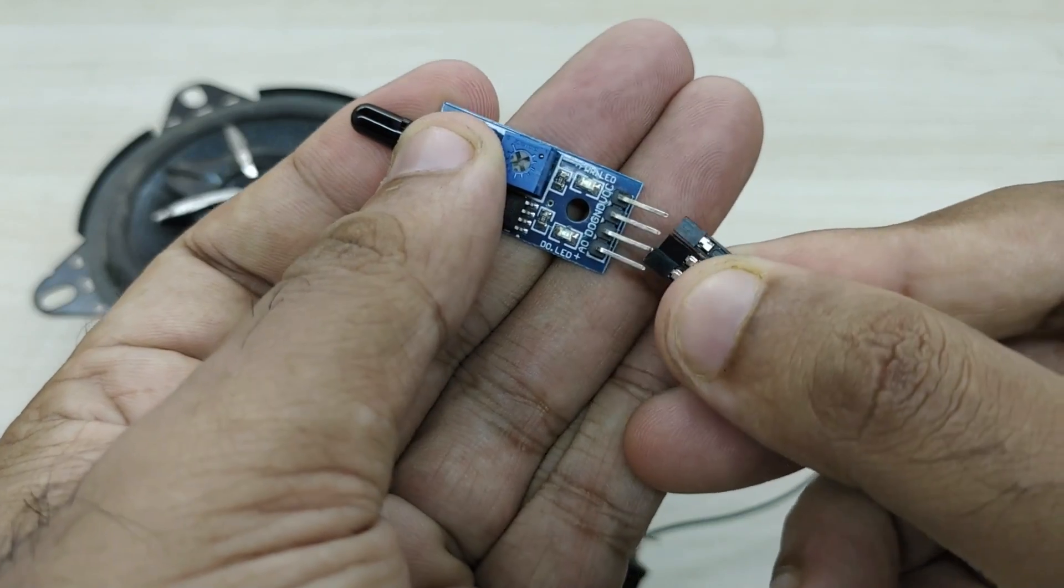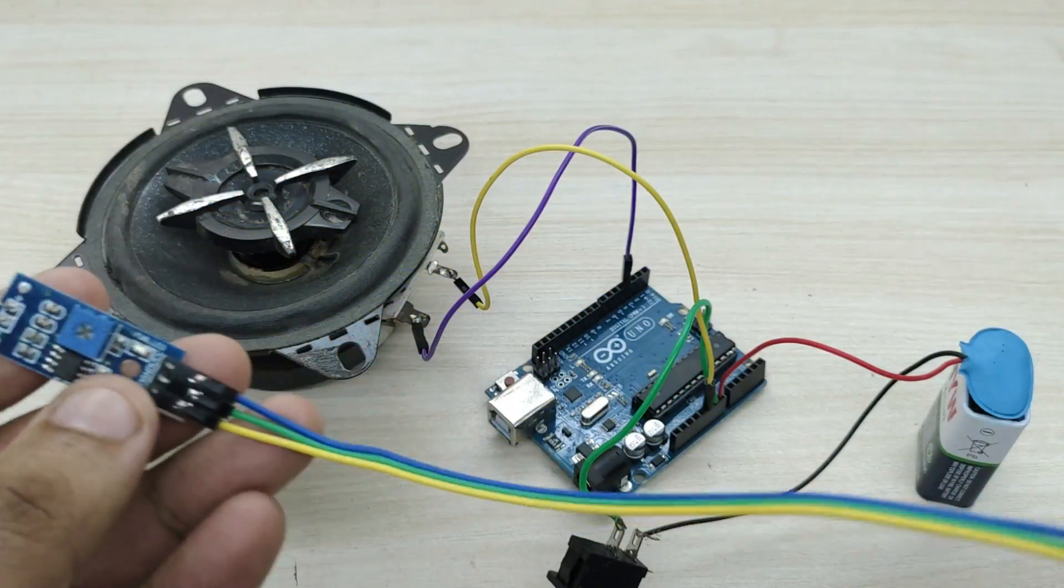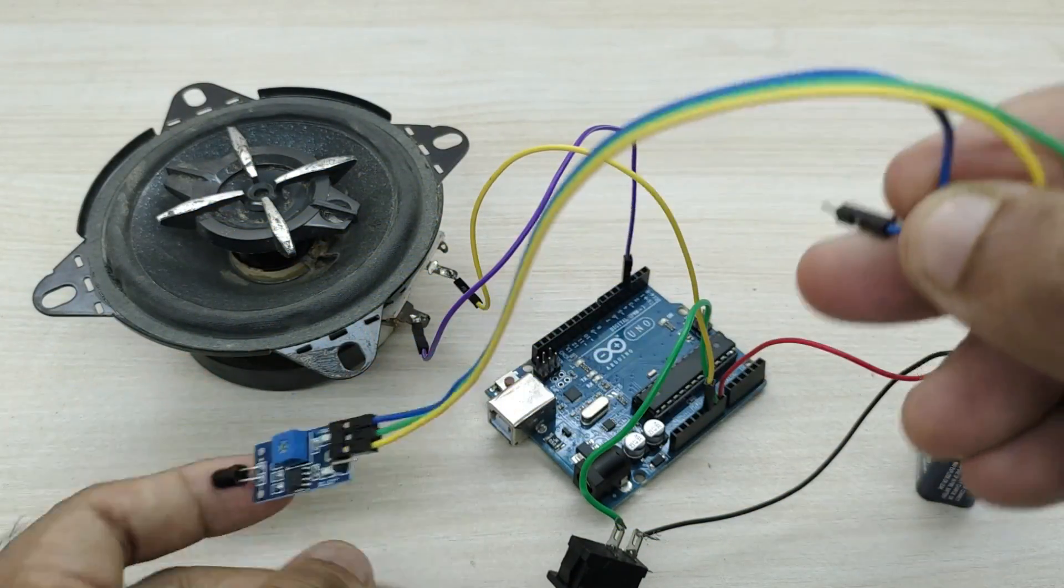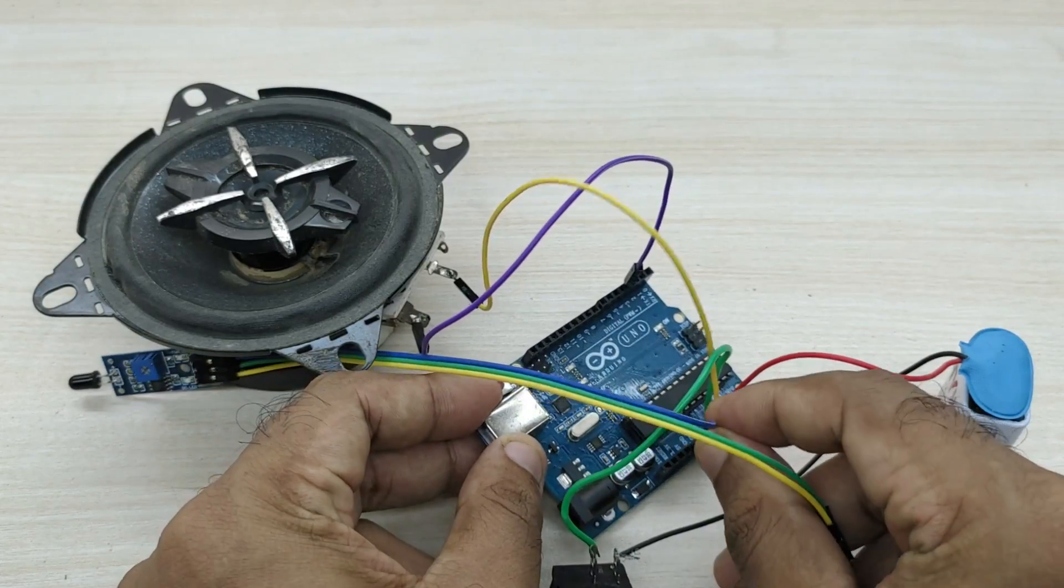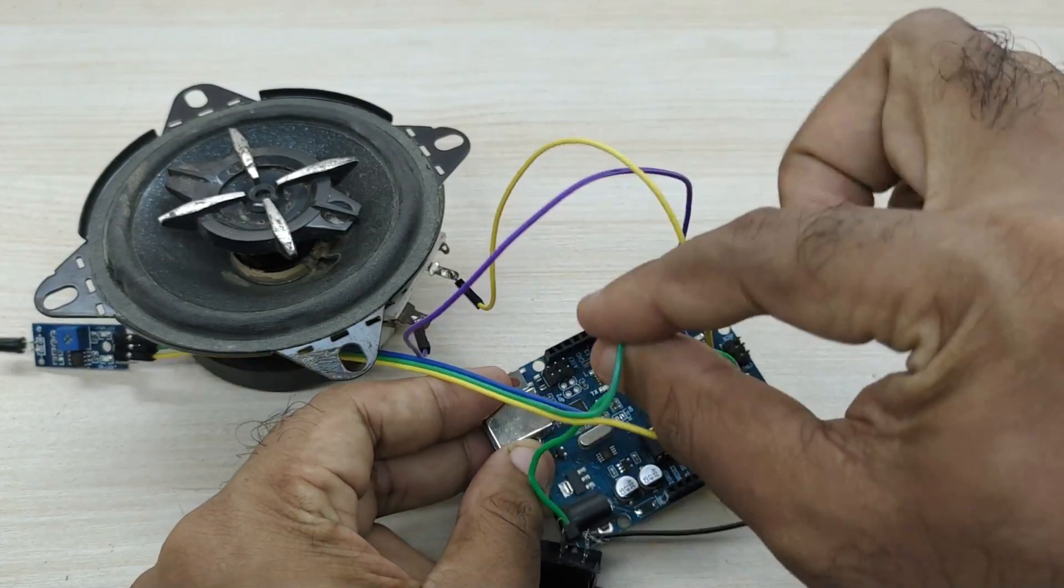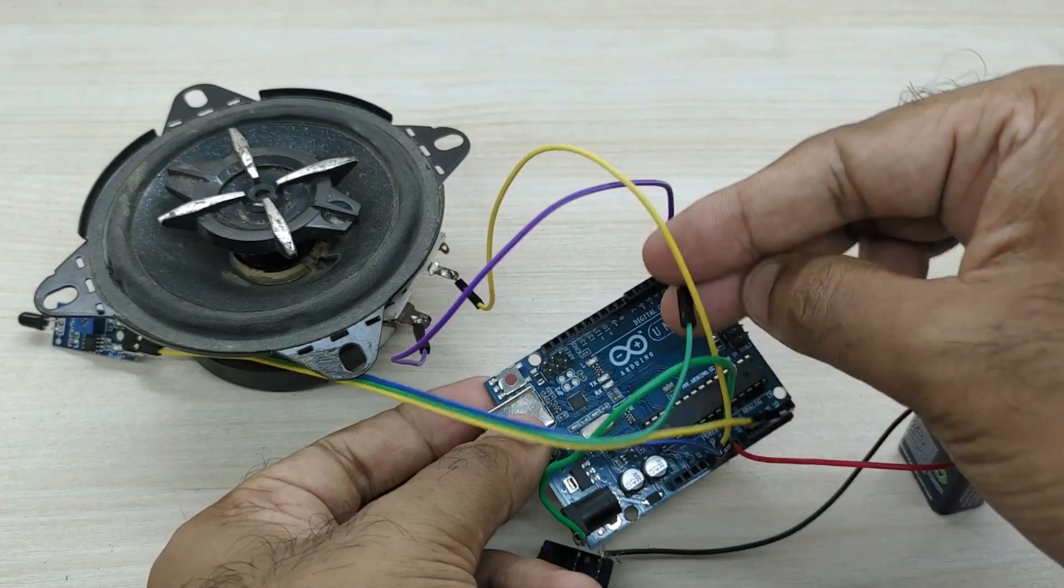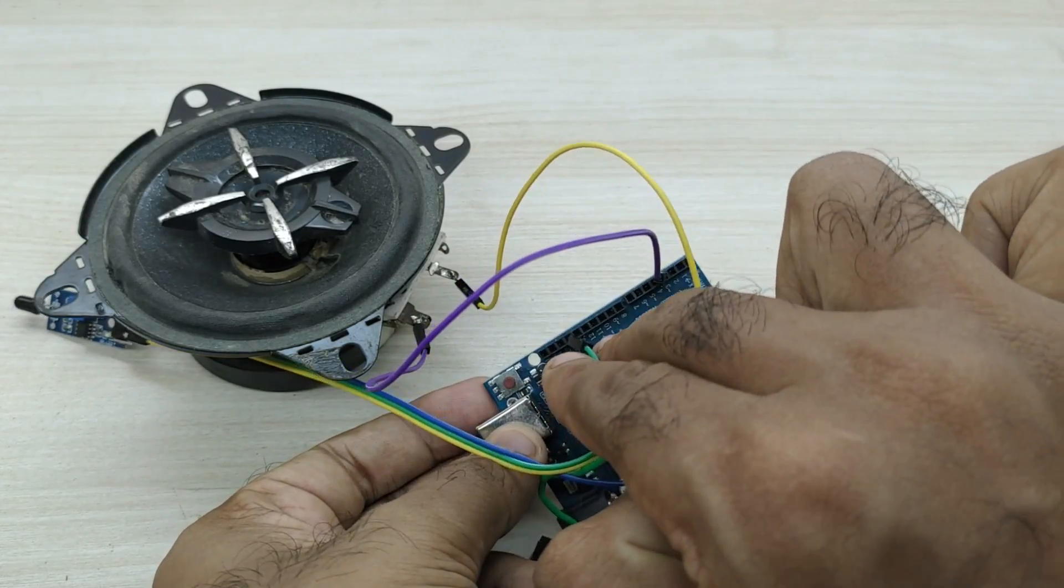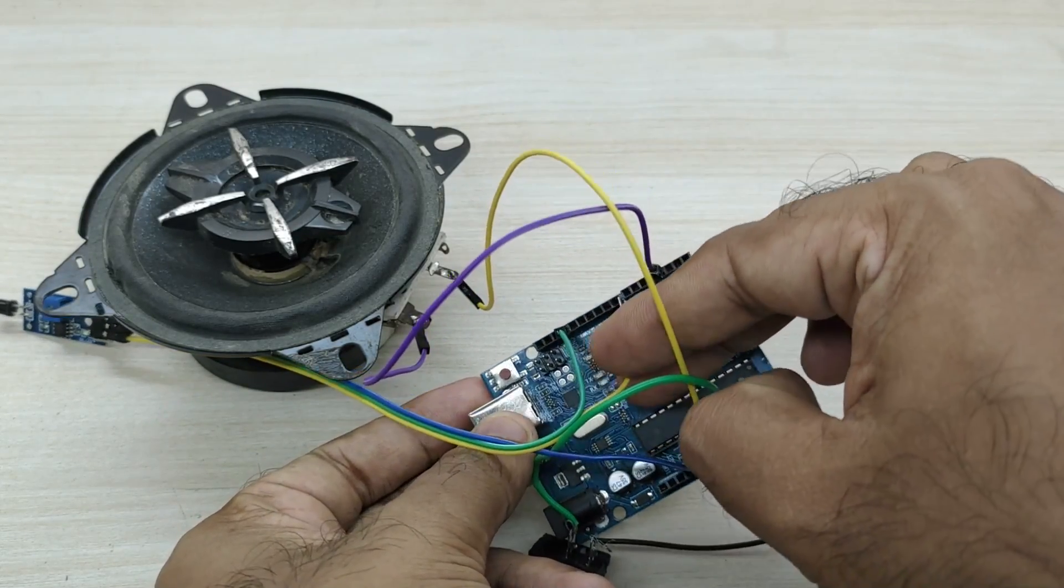Connect jumper wire to the flame sensor. Connect VCC pin of sensor to plus 5 volt pin of Arduino and ground pin of sensor to ground pin of Arduino. Connect the signal pin of sensor to pin number 8 of Arduino.